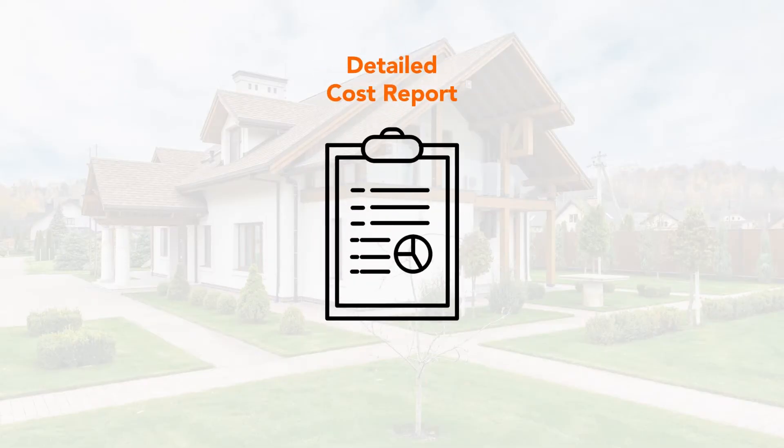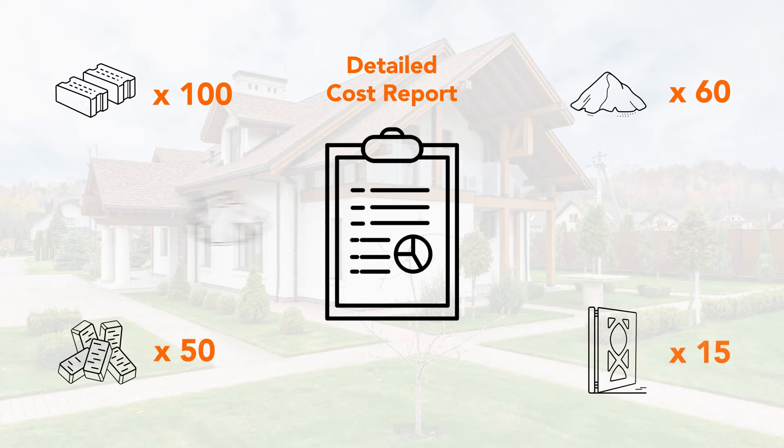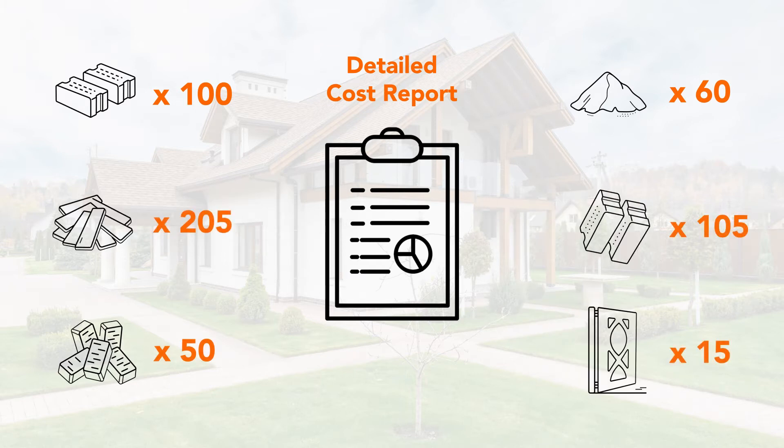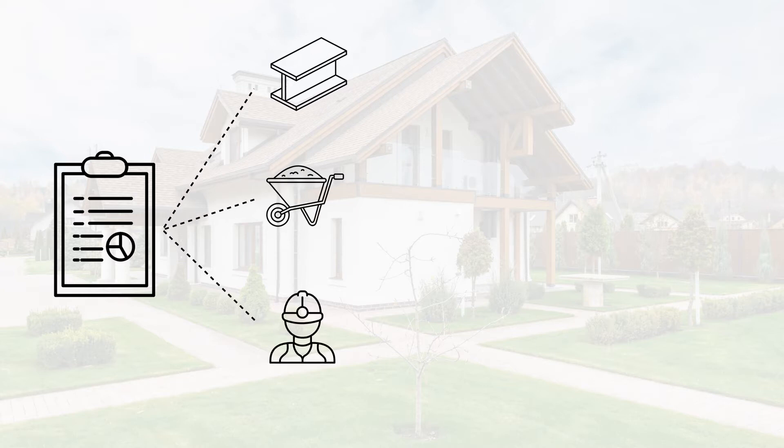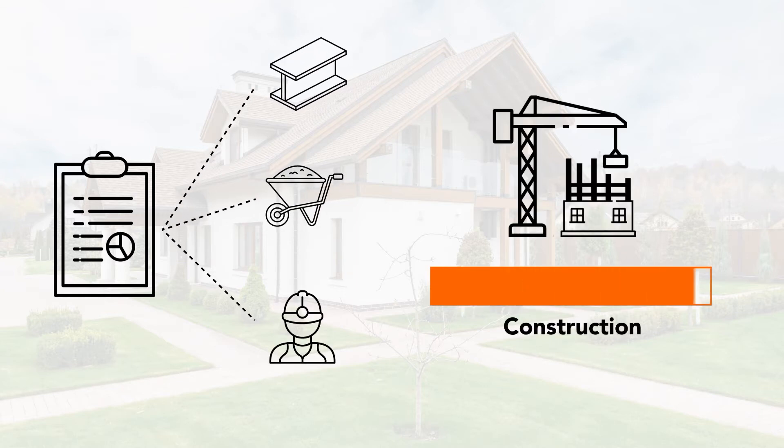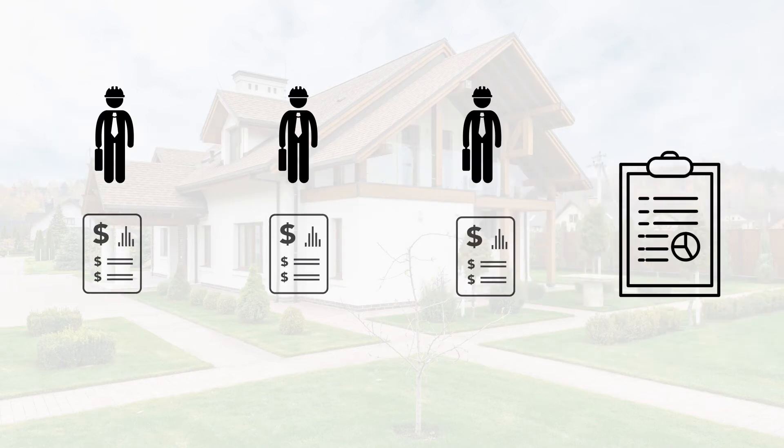A detailed cost report is a document prepared to give measured quantities of each and every item involved in the construction project. But it shouldn't be confused with a construction cost estimation report — a detailed cost report breaks down each specification and is measured in far more detail. The report includes a complete list of materials, equipment and labour requirements needed to complete the project, to be handed over to contract tenders to prepare a price for carrying out the works. This way all your contract tenders will be providing a quote based on the same quantities, so you'll end up with a much more fair tendering process.